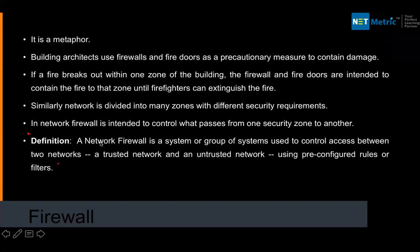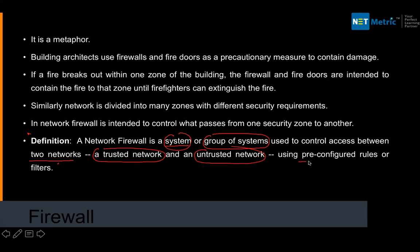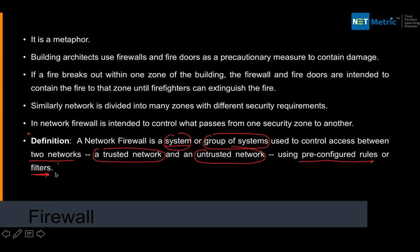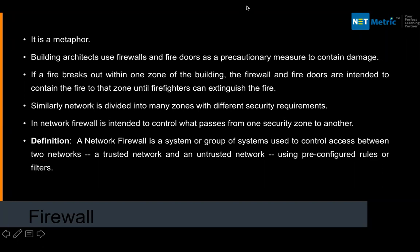The actual definition from Wikipedia: a network firewall is a system or group of systems used to control access between two networks — trusted and untrusted — using pre-configured rules or filters. A firewall is a pre-configured device that ensures traffic from trusted to untrusted passes without fail, but from untrusted to trusted it controls and may block that traffic.